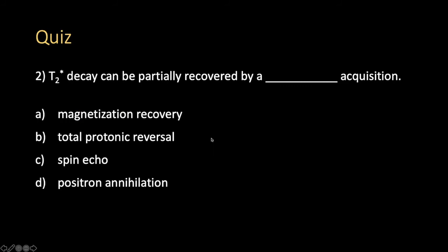Another quiz question: T2-star decay can be partially recovered by a blank acquisition. A, magnetization recovery. B, total protonic reversal. C, spin echo. Or D, positron annihilation. Everyone who answered is saying C, and spin echo is correct. I'm sorry we didn't go into it in detail, but you guys are experts anyway.